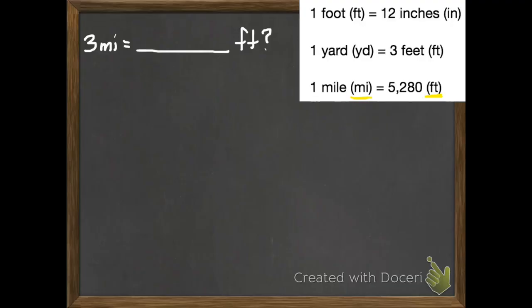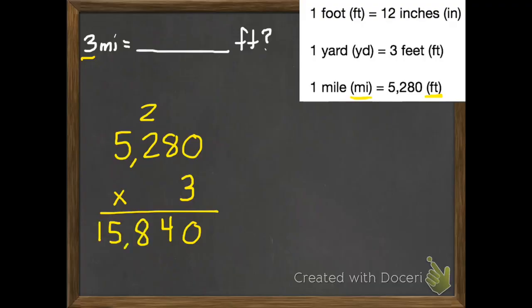1 mile equals 5,280 feet. So we're going to need 5,280. And how many miles do we have? We have 3. So 5,280 times 3. When we multiply this, we have 0 times 3, which is 0. 8 times 3, which is 24. 2 times 3 is 6, plus 2 is 8. And 5 times 3 is 15. So we get 15,840.